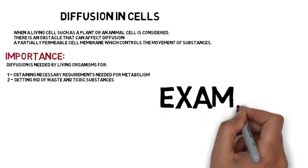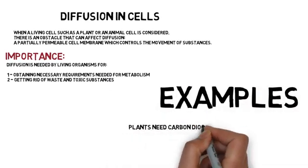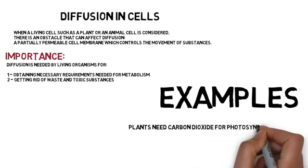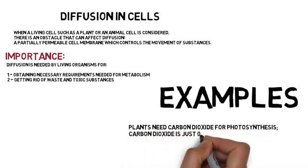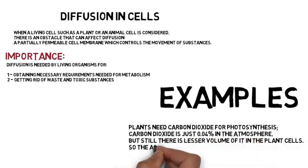Examples. Plants need carbon dioxide for photosynthesis. Carbon dioxide is just 0.04% in the atmosphere, but still there is a lesser volume of it in the plant cells.